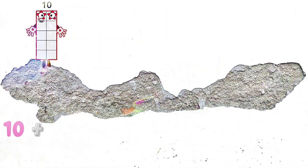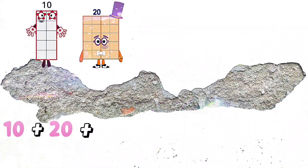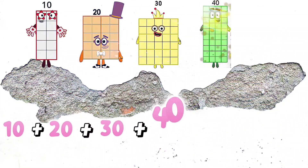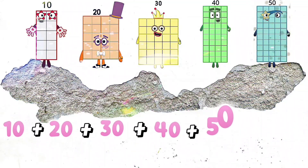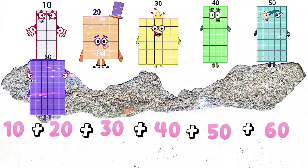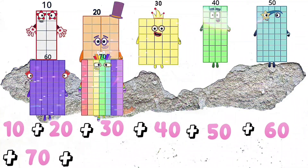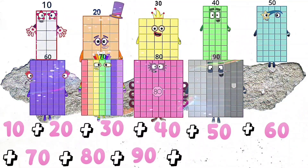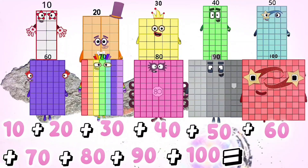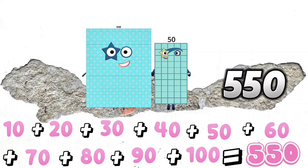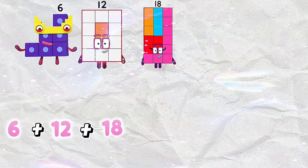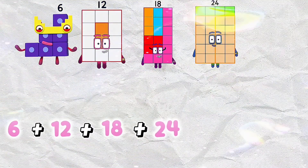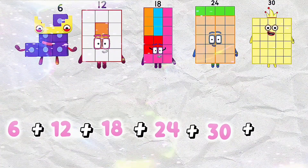10 plus 20 plus 30 plus 40 plus 50 plus 60 plus 70 plus 80 plus 90 plus 100 is equals to 550.